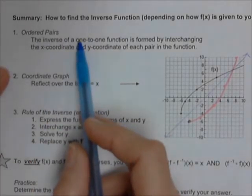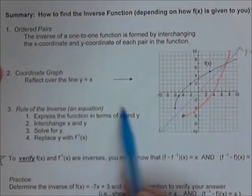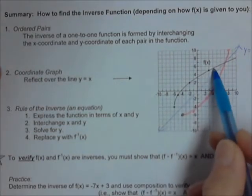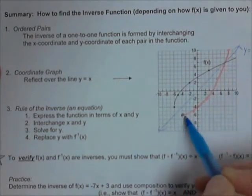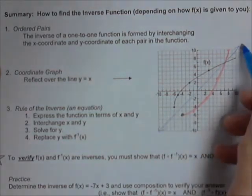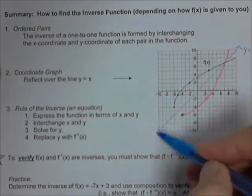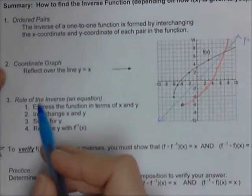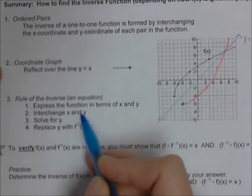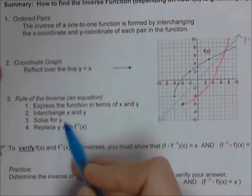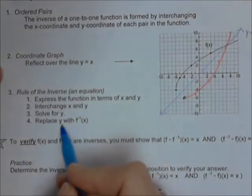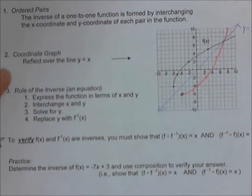If you have an ordered pair, you switch x and y. If you have a graph, you pick out those points, switch the x's and y's, and graph them. It's the same thing as reflecting across the line y equals x. And if you have a rule or an equation, you switch x and y, solve it for y, and then replace y with f inverse of x.